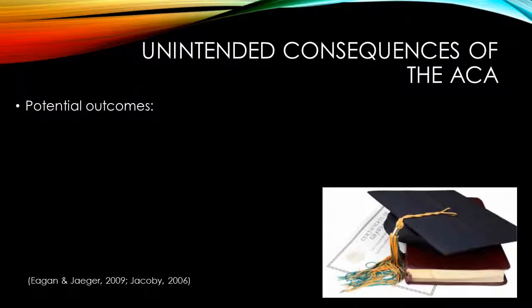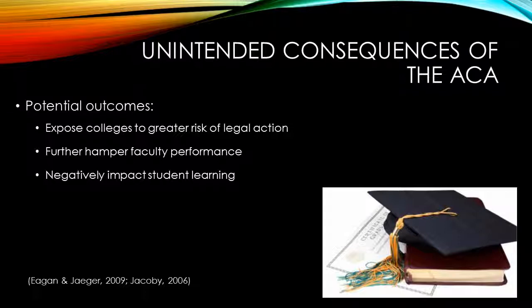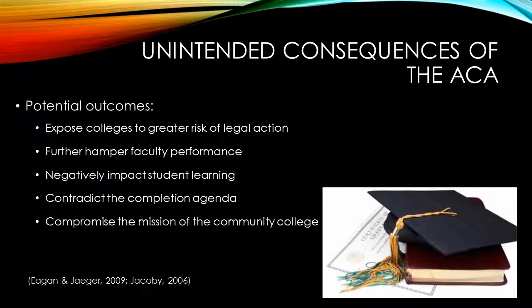We have now established that the ACA has unintended consequences. It is exposing community colleges to increased financial risk through legal action by adjunct faculty or through steep fines imposed by the employer mandate. Reducing adjunct hours will likely only increase student exposure to part-time faculty as community colleges fill gaps with even more part-time faculty or overburdened full-time faculty, further hampering faculty performance and negatively impacting student learning — a direct contradiction to the completion agenda. The biggest threat is to the overall mission of the community college to provide affordable, quality education to students.